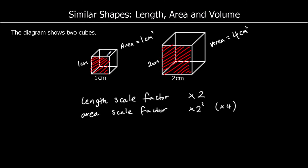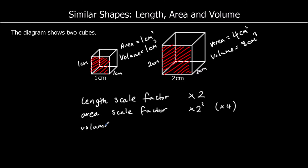And how about the volume? The volume of my 1cm cube is 1 times 1 times 1, which is 1cm cubed. For the 2cm cube, it's got a volume of 2 times 2 times 2, which is 8cm cubed. So the volume scale factor is times 2 cubed, or times 8. This is the pattern: the area scale factor is the length scale factor squared, and the volume scale factor is the length scale factor cubed.